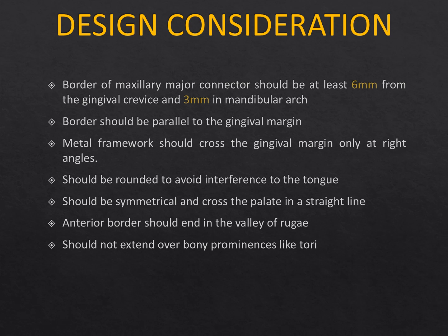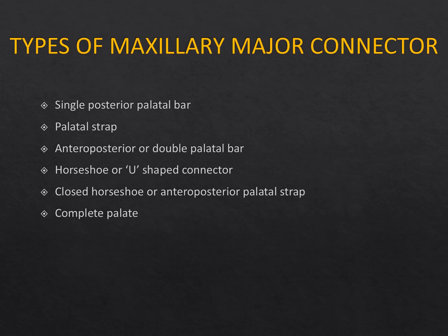Design considerations: for a maxillary major connector, the border should be at least 6 mm away from the gingival margin; for the mandible, at least 3 mm from the gingival margin or crevice. The superior border should be parallel to the gingival margin, following the gingival zenith of the teeth. The metal framework should cross the gingival margin at a right angle, be rounded to avoid tongue interference, be symmetrical, cross the palate in a straight line, and the anterior border should end in the valley of the rugae — not on or across the rugae. They should not extend over bony prominences like tori, exostosis, or a prominent mylohyoid ridge.